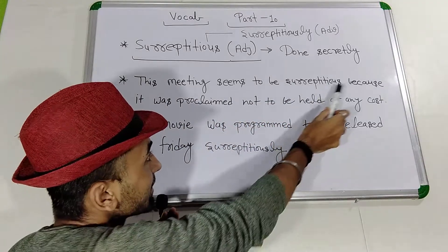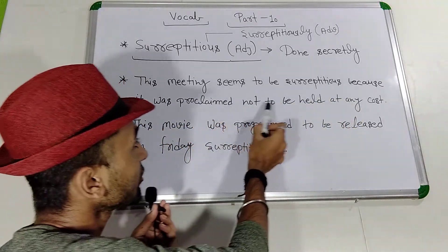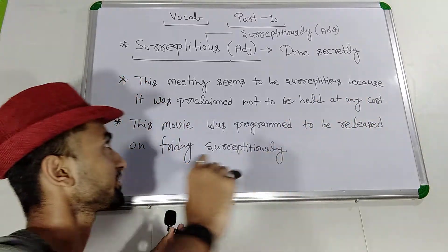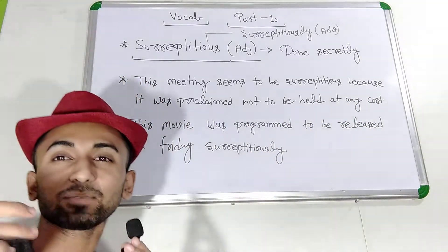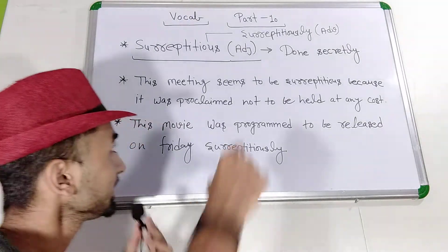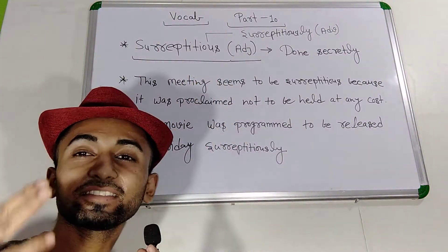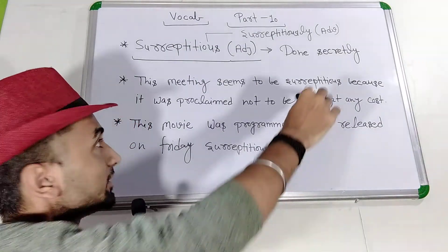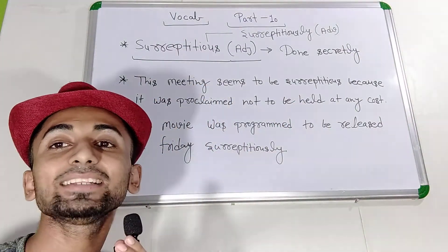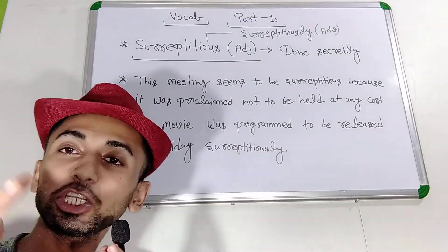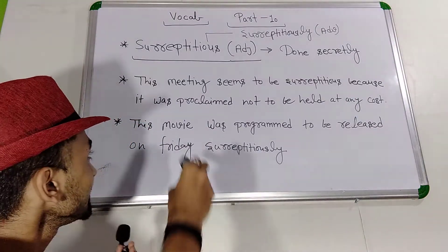...surreptitious because it was proclaimed not to be held at any cost. So there is something suspicious here. This meeting seems to be surreptitious because it was proclaimed not to be held at any cost.